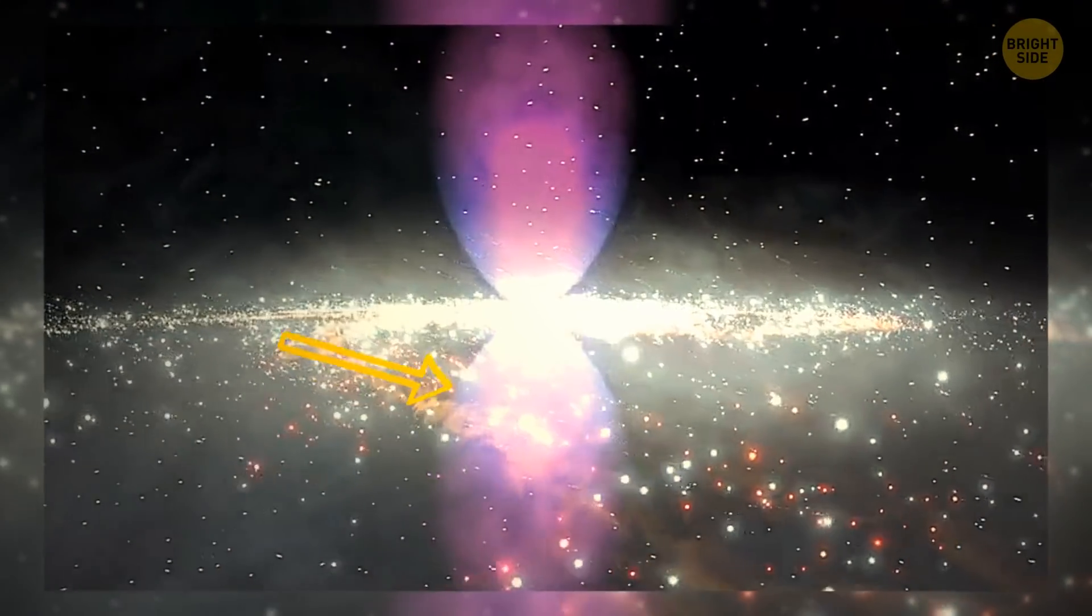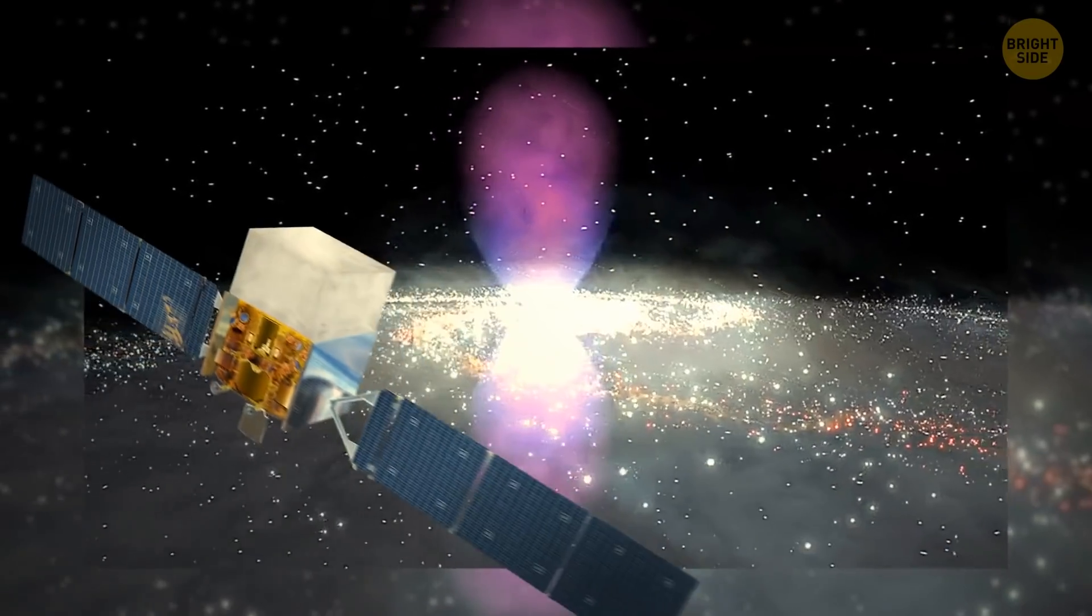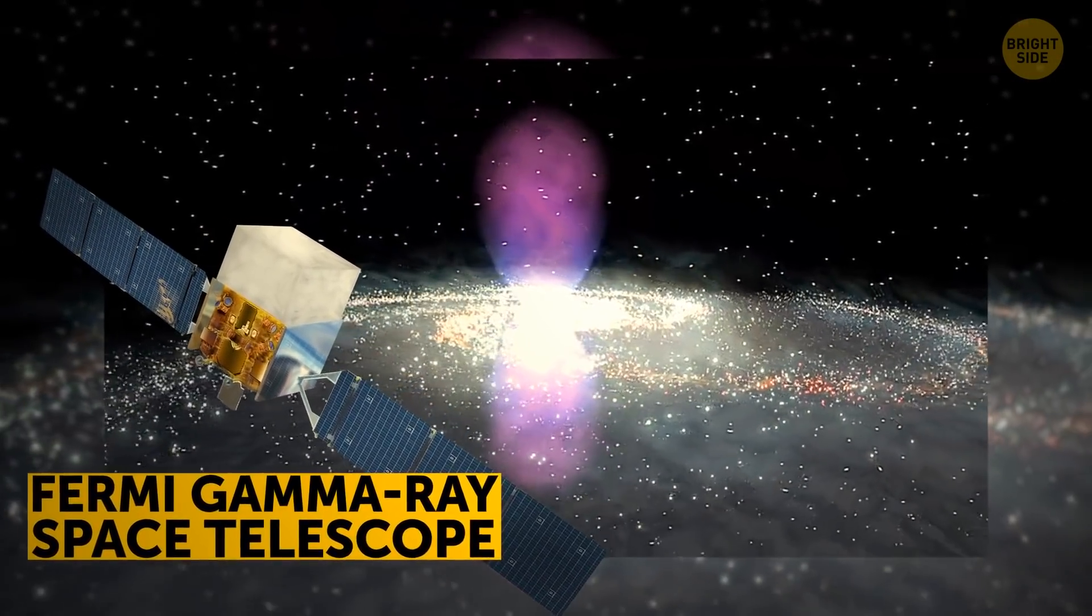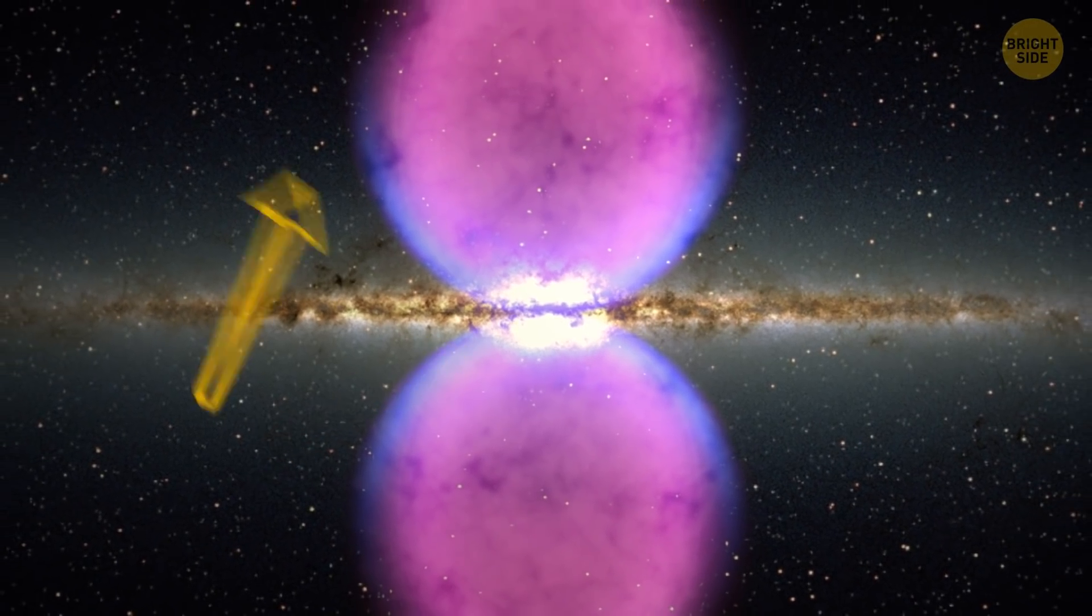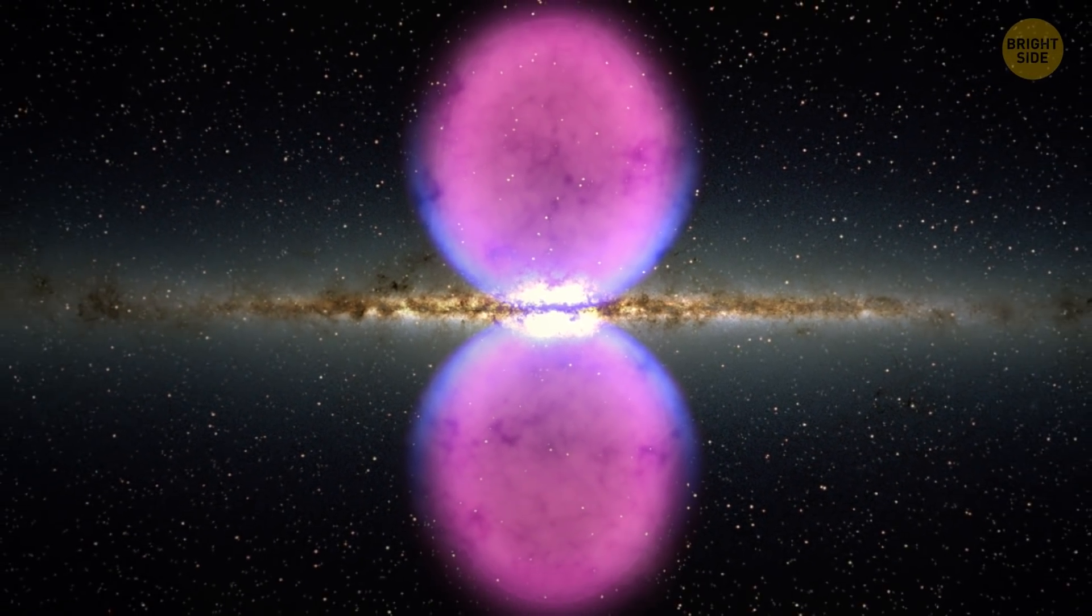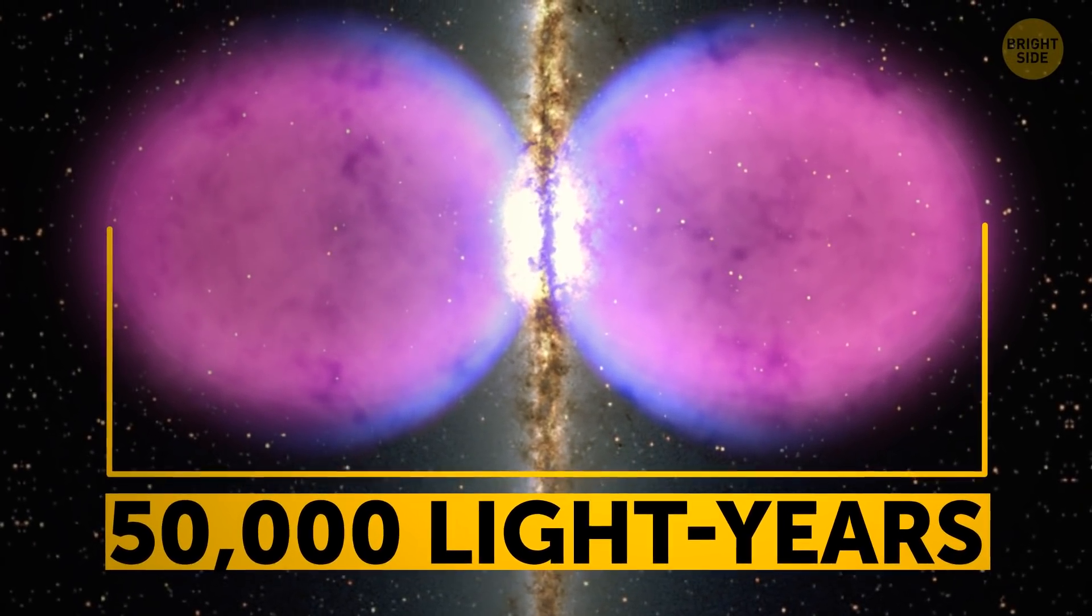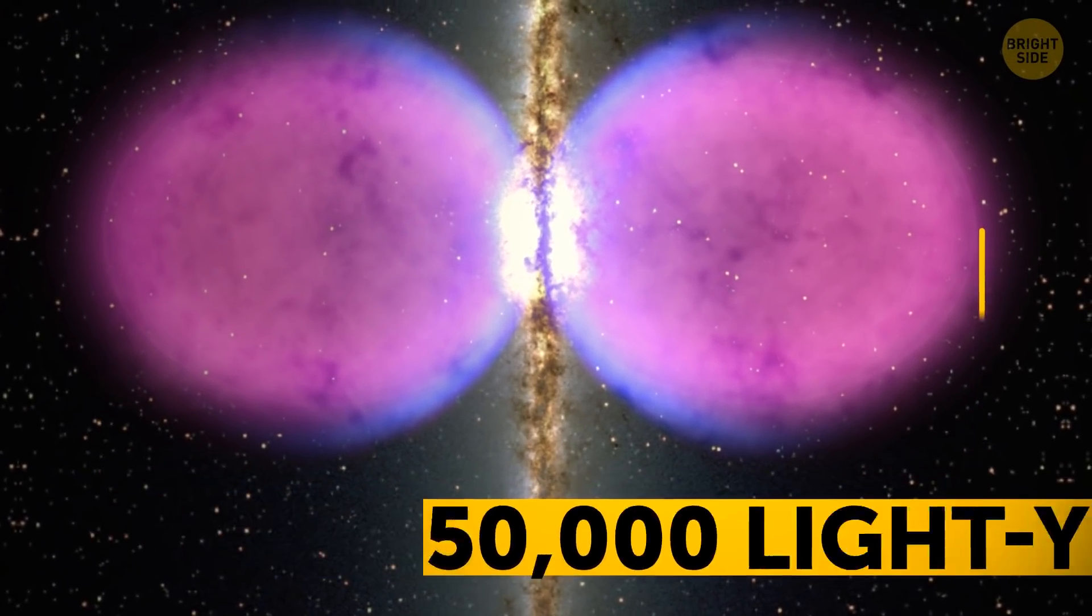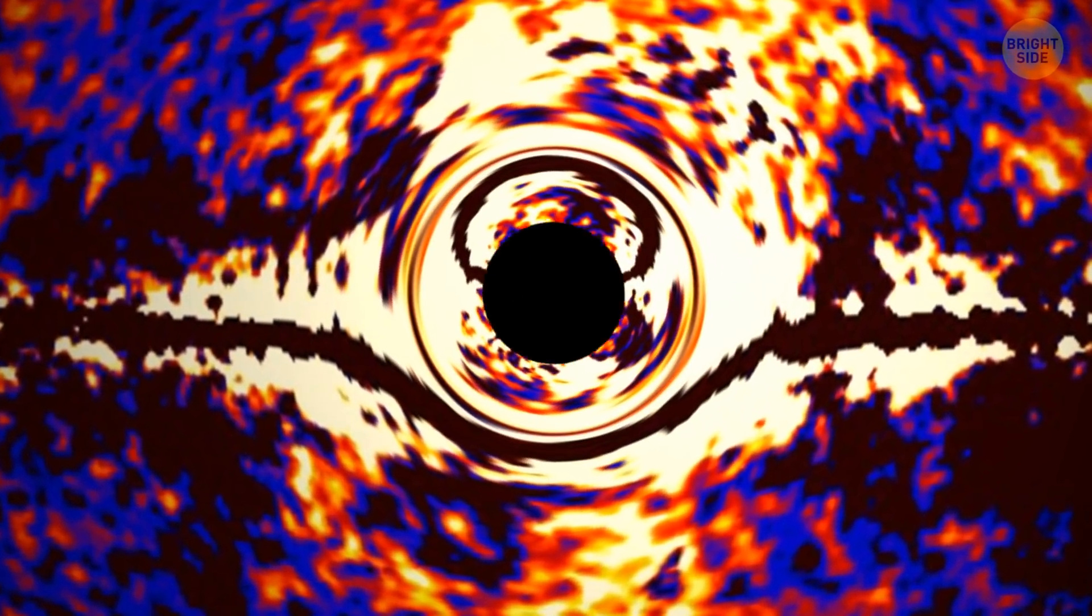Fermi bubbles are two mysterious gigantic blobs made of cosmic rays, gas, and dust found in 2010. They hang around the central black hole of our galaxy, one on either side. Bubbles expanded below and above our galaxy over time, so they're now around 50,000 light-years across. No one knows how they got there, but one theory says they're related to the same black holes that occurred about 6 million years ago.